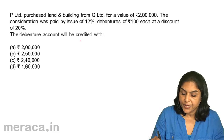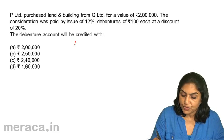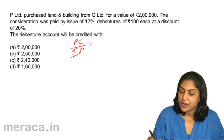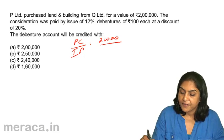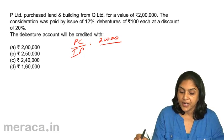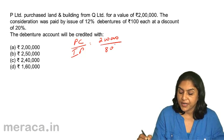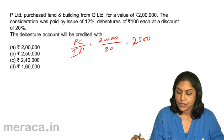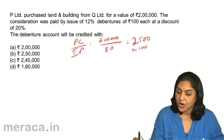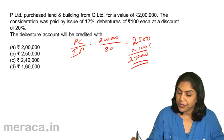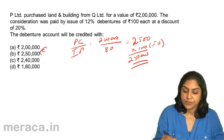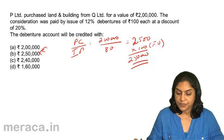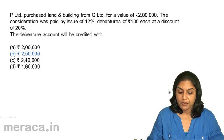How many debentures would be issued? Purchase consideration divided by issue price. Purchase consideration is 2 lakhs divided by the issue price — 100 each at a discount of 20%, therefore divided by 80 — we get 2,500 debentures of 100 each, which is 2 lakhs 50,000. That should be the amount credited to the debentures account. Answer B: 2 lakhs 50,000.